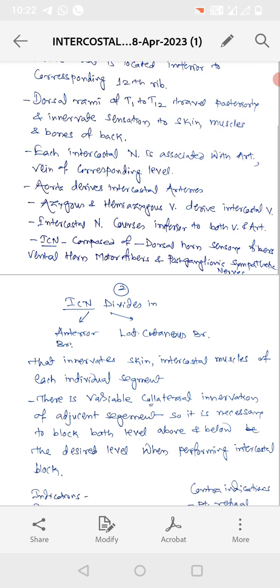Intercostal nerve is composed of dorsal horn which contain sensory fibers and ventral horn motor fibers and post ganglionic sympathetic nerves.